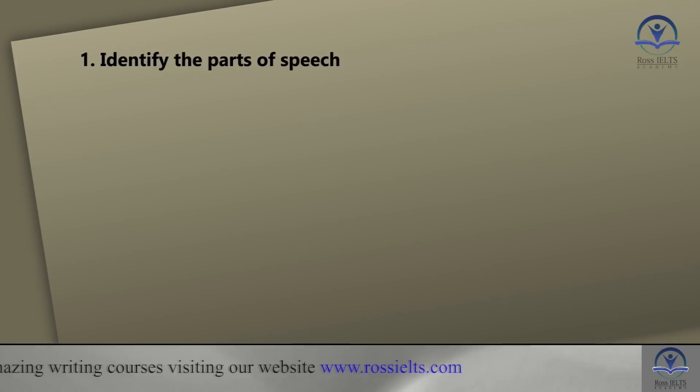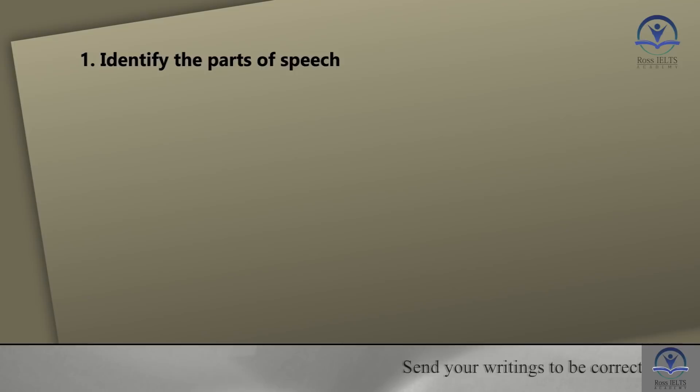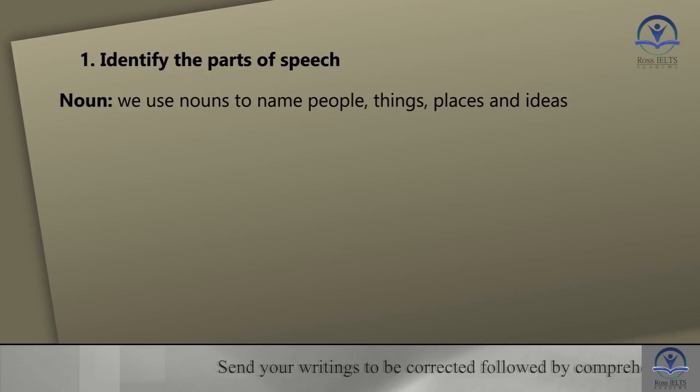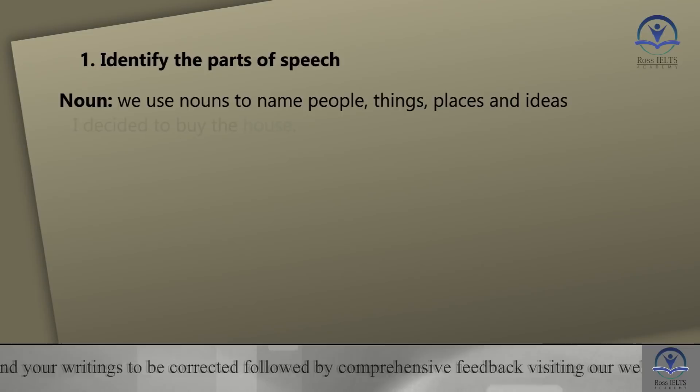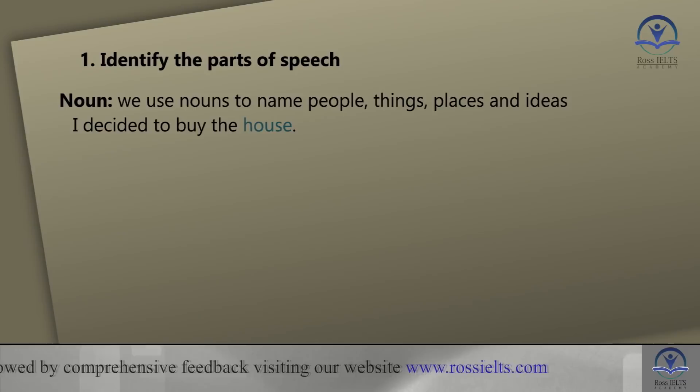The first step is to identify the part of speech — that is, how one word functions within a sentence. There are eight parts of speech in English. The first one is a noun. We use nouns to name people, things, places, and ideas. For example: I decided to buy the house. 'House' is a noun.